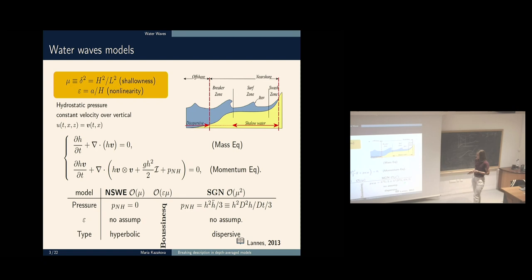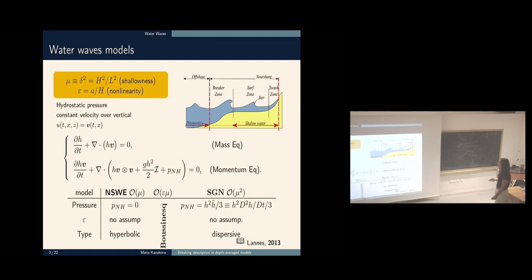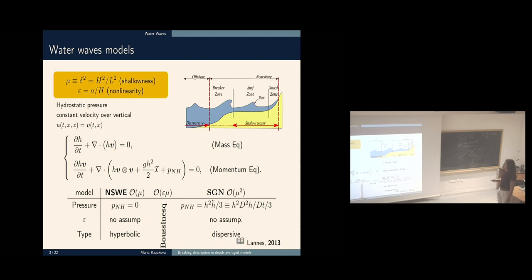For the justification and derivation of such models, I reference the David Lannes book, and now also Katrin's course. Regarding the validity of these models for water wave propagation, we can compare numerical results with experiments. Dispersive properties are very important in the shoaling zone — this is related to the simulation we saw where the shallow water equation developed a shock, but the dispersive wave propagates a nice solitary wave as a regular solution. This is very important for correctly describing the amplitude of waves in the flooding zone.